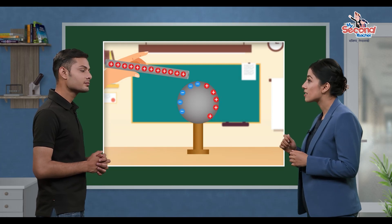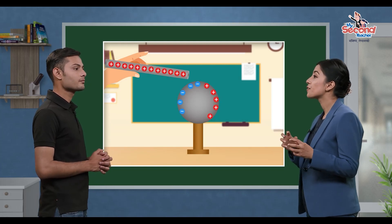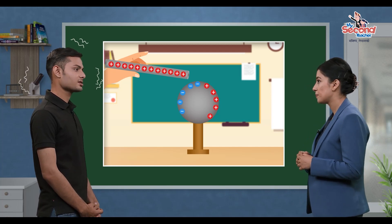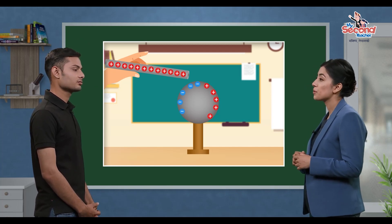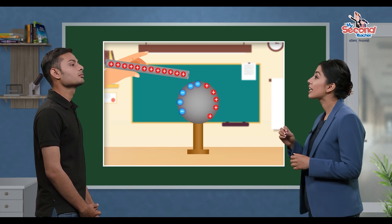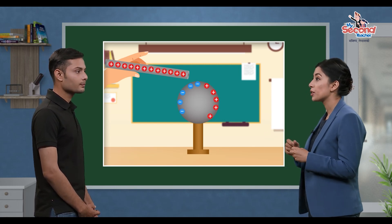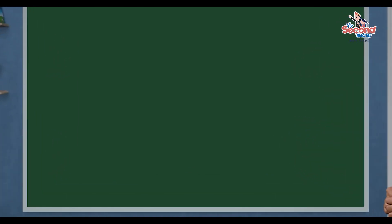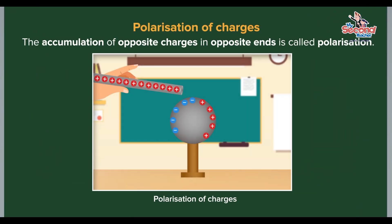Positive charges and negative charges different ends, what do you do? That's right, teacher. Positive charges and negative charges different ends. In other words, the accumulation of opposite charges in opposite ends is called polarization.